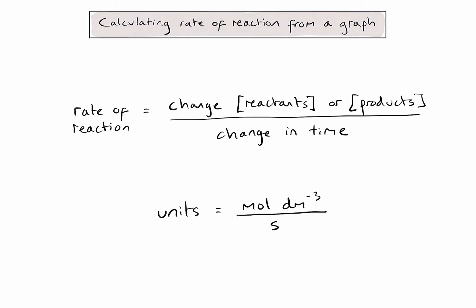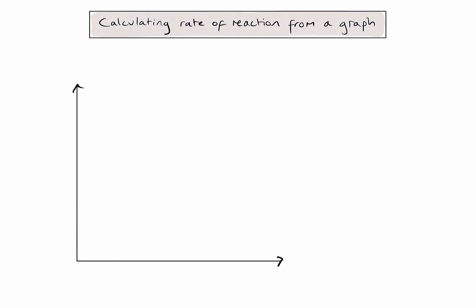So if I'm using a graph to calculate the rate of reaction, I would expect to see the concentration of a reactant or product on one axis and time on the other axis. I might expect my graph to look something like this.